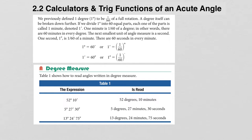Previously, we've defined a degree to be 1/360th of a full rotation — in other words, one rotation is 360 degrees. The degree measure itself can be broken down further. If you divide one degree into 60 equal parts, each part is called one minute. The notation for minute is the prime symbol. So one minute is 1/60th of a degree, meaning there are 60 minutes in every degree.